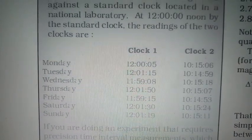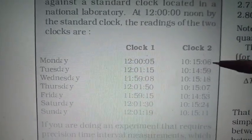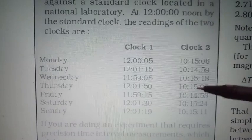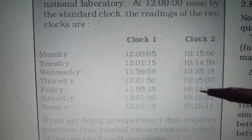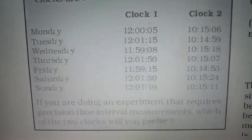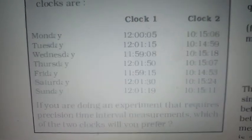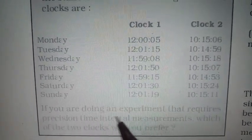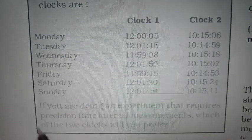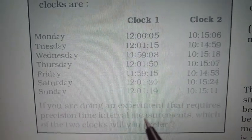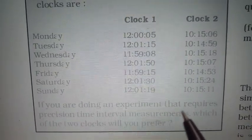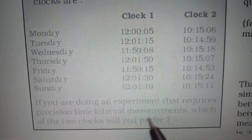This means there is a negative error, so we have positive and negative errors in this case. A question is: if you are doing an experiment that requires precision time interval measurement, which of the two clocks will you prefer?